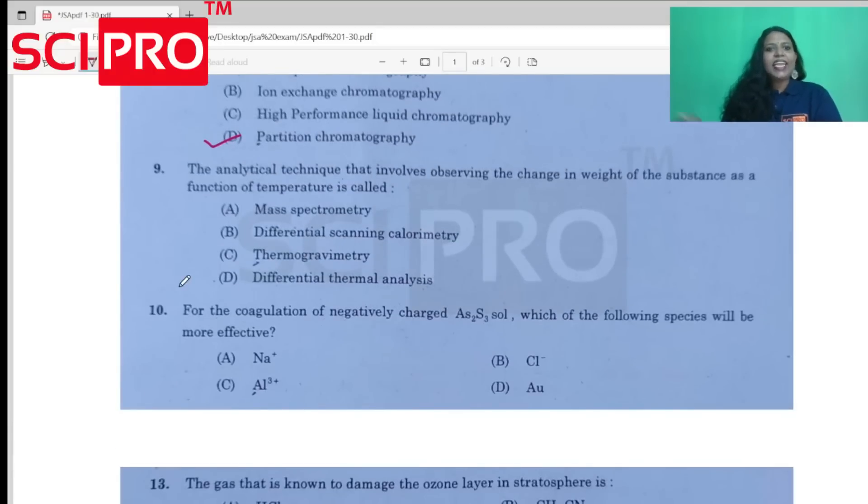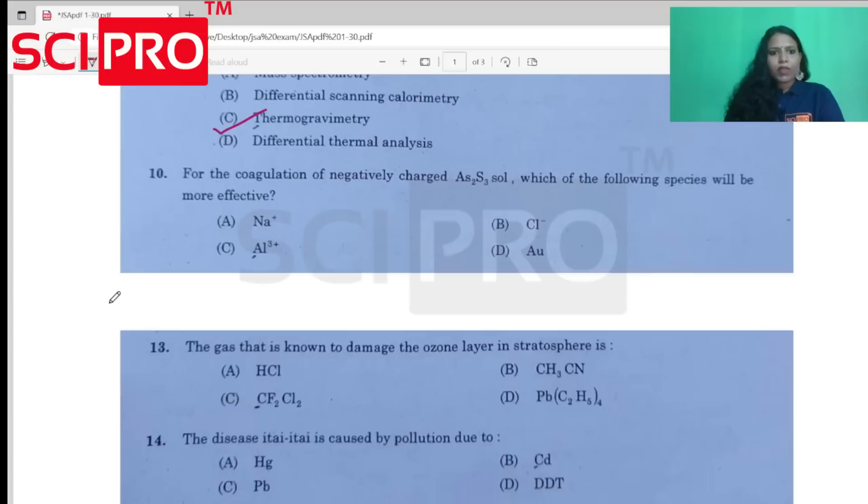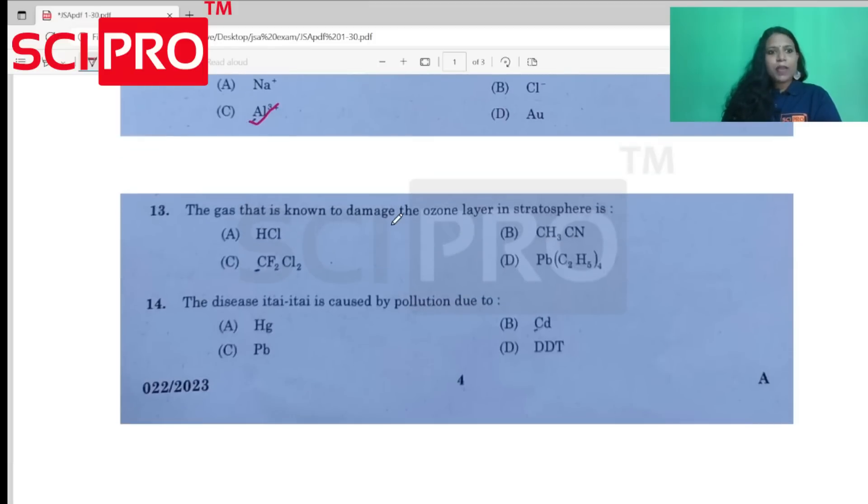Question number 9: The analytical technique that involves observing the change in weight of a substance as a function of temperature is called thermogravimetry. Question number 10, the answer is AL3+. Coagulation - the answer is AL3+.